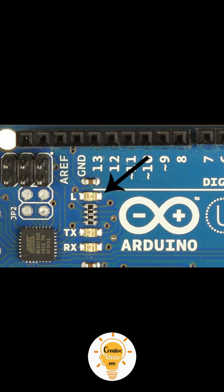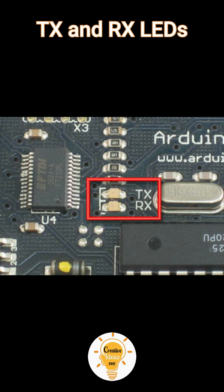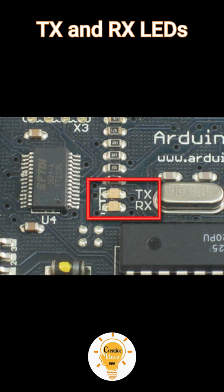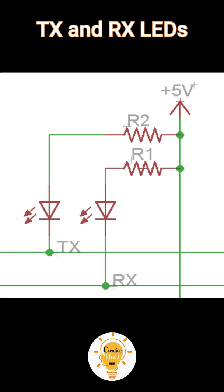TX and RX LEDs: On your board you will find two labels, TX and RX, which appear in two places on the Arduino UNO board. First, at digital pins 0 and 1, to indicate the pins responsible for serial communication. Second, the TX and RX LEDs — the TX LED flashes at different speeds while sending serial data, depending on the baud rate used by the board. RX flashes during the receiving process.